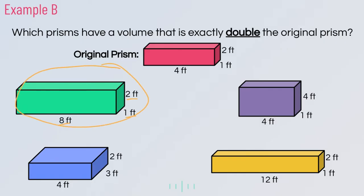Looking at the blue prism, two and four are the same, but three is triple one — not double — so this does not give a doubled volume. The purple box has four, which is double two, and the other dimensions are the same, so it also works. The yellow box has 12, which is three times four, so that doesn't work either. We end up with two prisms that have exactly double the volume.